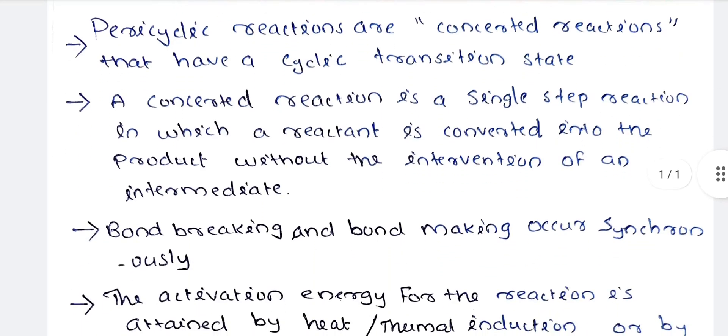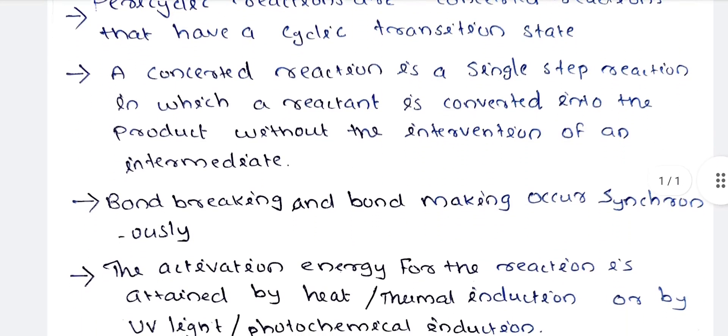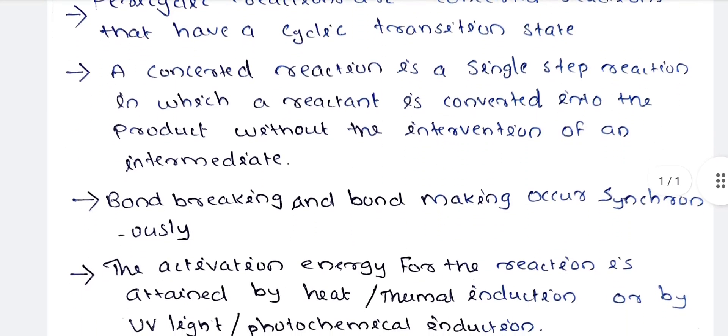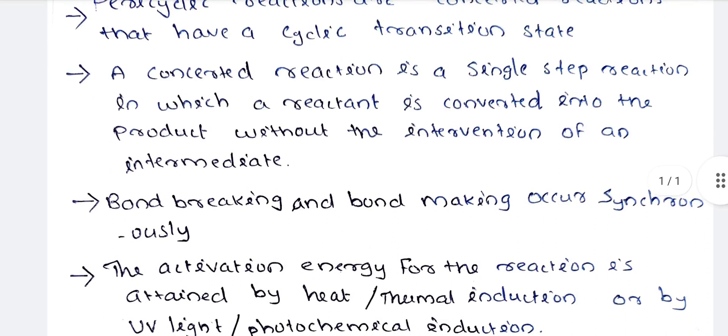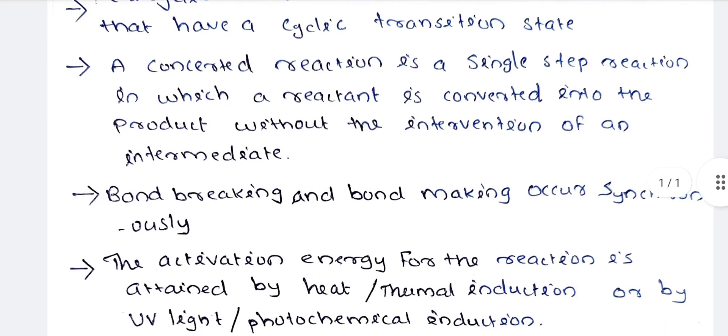A concerted reaction is a single step reaction in which a reactant is converted into a product without the intervention of an intermediate. It is a one-step process with no intermediate formation.